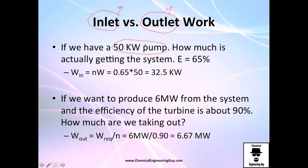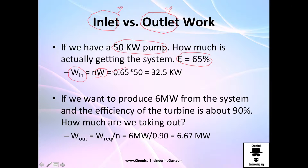For example: a 50 kW pump — how much power is actually getting into the system if the efficiency is 65%? The work going into the system equals efficiency times the pump power: 0.65 × 50 = 32.5 kW.